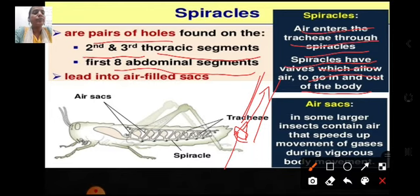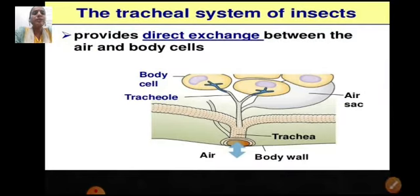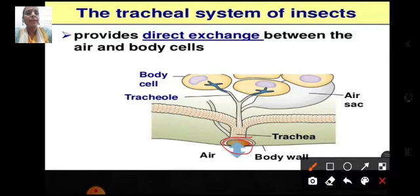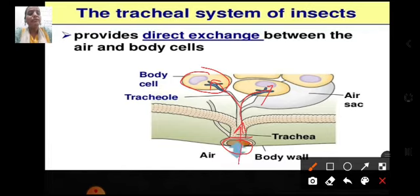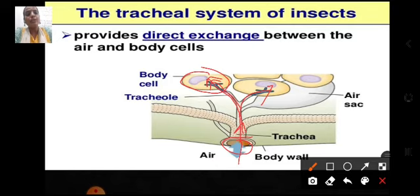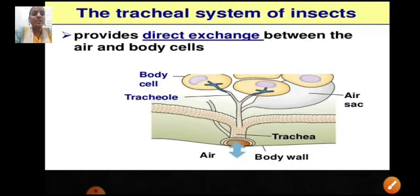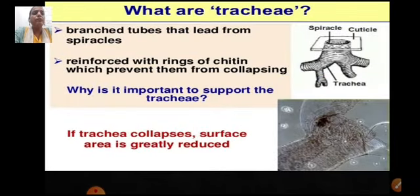The tracheal system provides for direct exchange between the air and body cells. Air enters through the spiracle, travels through the trachea, which divides into tracheules that lead directly to the body cells. Oxygen enters via the spiracle, is transported through the trachea and tracheules, and diffuses into the cells where it is used to break down glucose and release energy. Carbon dioxide formed in the cells diffuses back through the tracheules and trachea and is exhaled out.